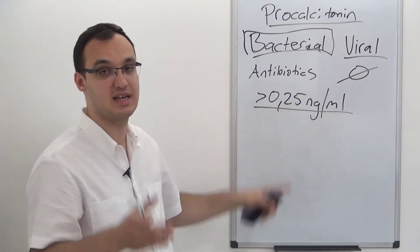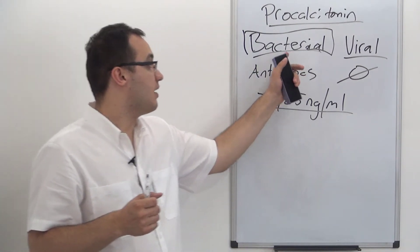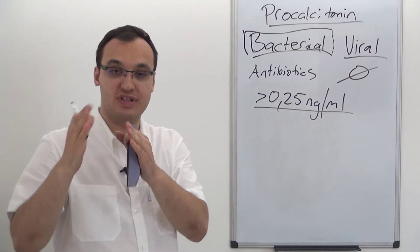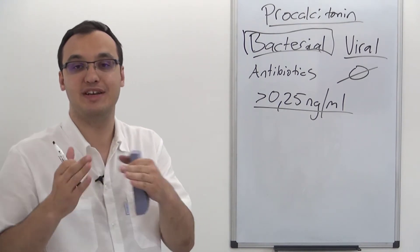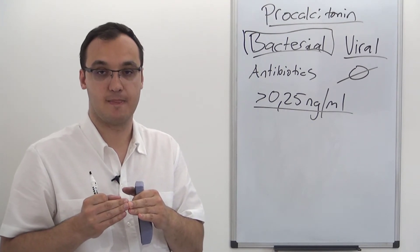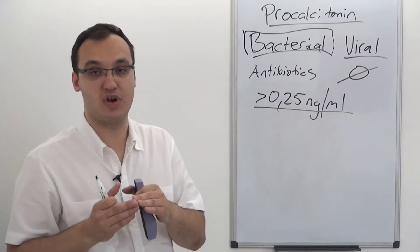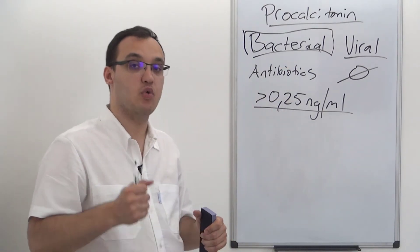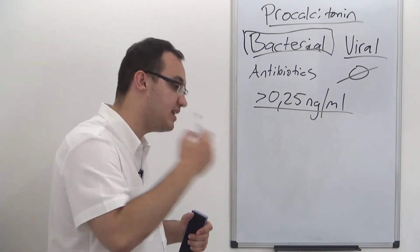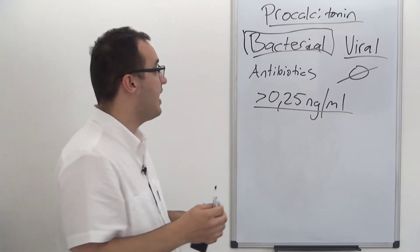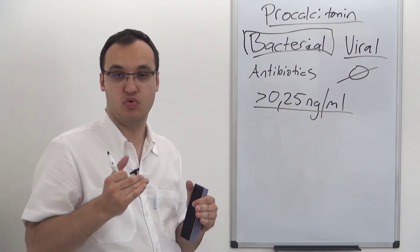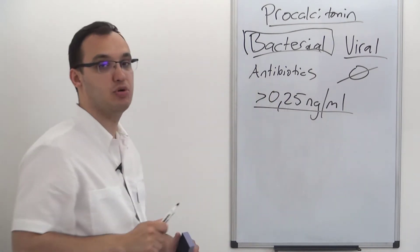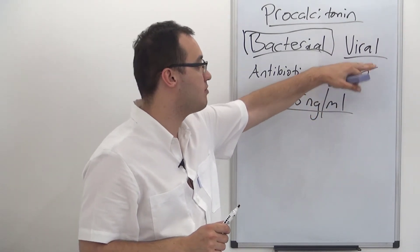There are atypical bacteria like Mycoplasma pneumoniae and Chlamydia pneumoniae, which cause around 20 to 30 percent of pneumonia cases. These atypical bacteria do not cause an elevated procalcitonin level. So if you have a low procalcitonin level, it could be Mycoplasma or atypical pneumonia, and therefore you should still use antibiotics. Viral infections and some atypical bacteria can have a normal procalcitonin level.